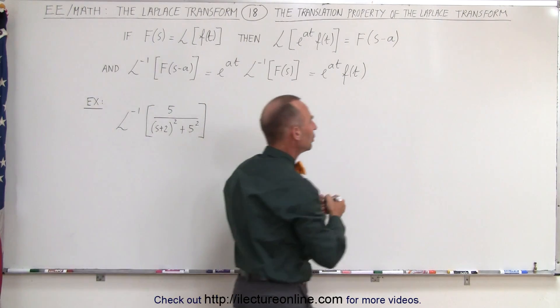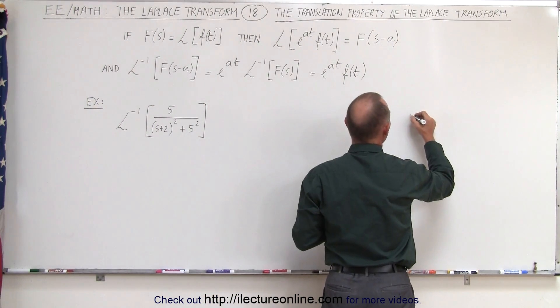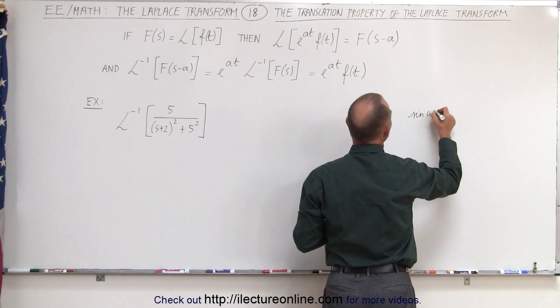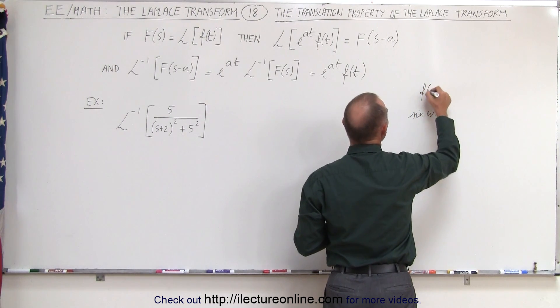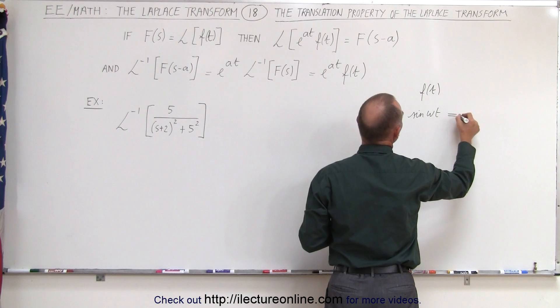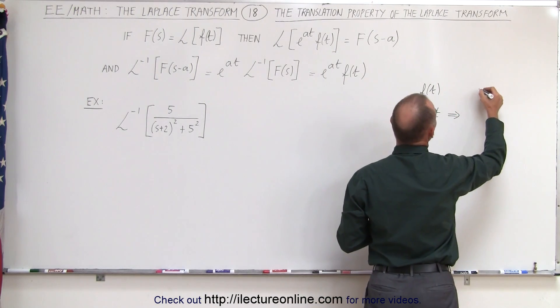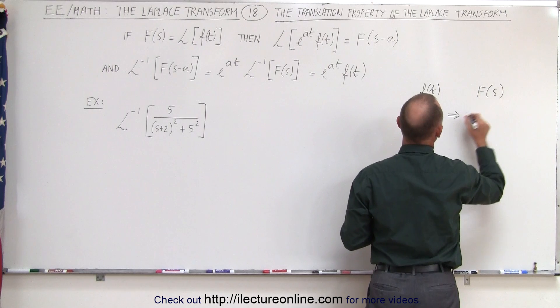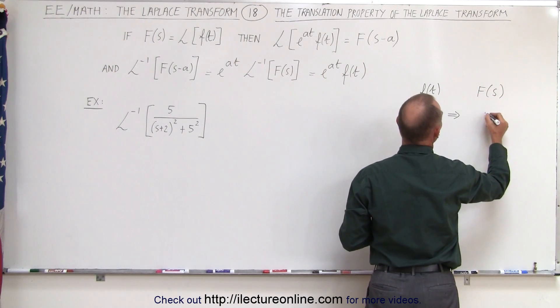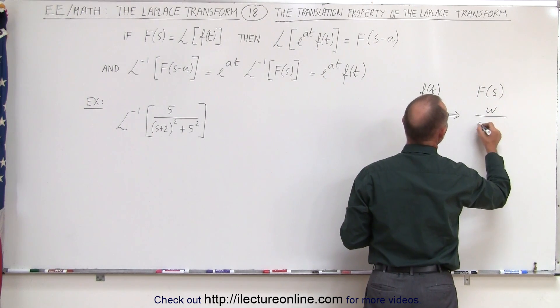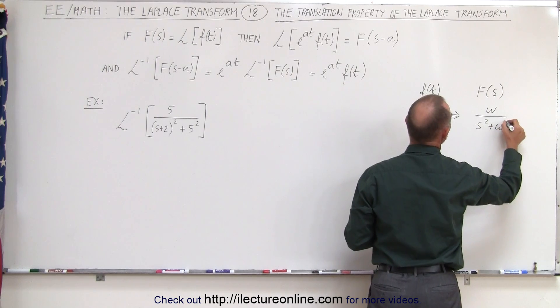Let's say here we know that if we have the sine of omega t in the time domain and we transform that into the frequency domain, this would look like this. This would be equal to omega divided by s squared plus omega squared.